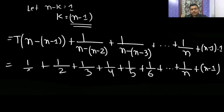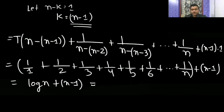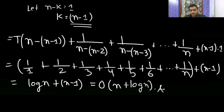The sum 1/1 plus 1/2 plus 1/3 plus ... plus 1/n is a harmonic series, and its sum is O(log n). So the total time complexity is log n plus n minus 1, which gives T(n) = O(n + log n). The final answer for the time complexity is O(n + log n).